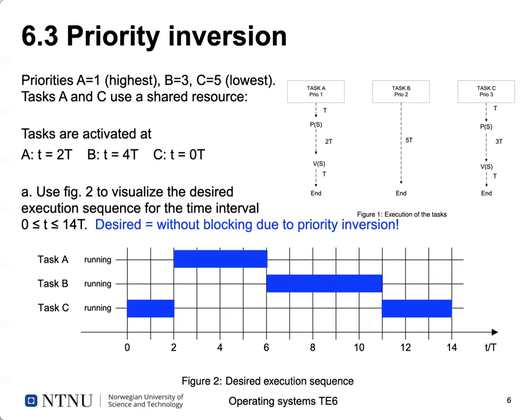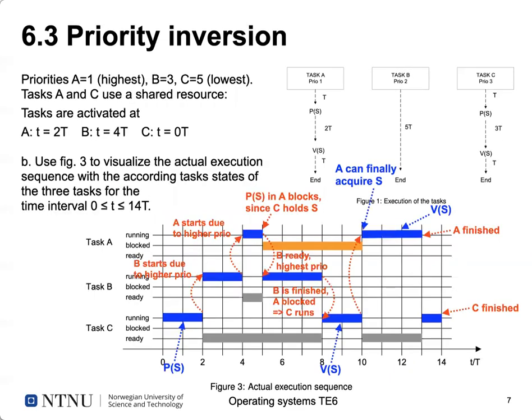With semaphores, things look more complicated. We start again with task C, which runs for one time unit and then successfully acquires the semaphore — since A has not started yet, the semaphore is available. C holds the semaphore and executes another time unit.